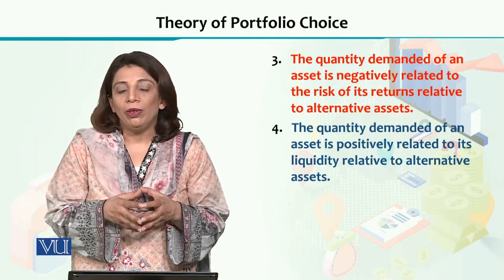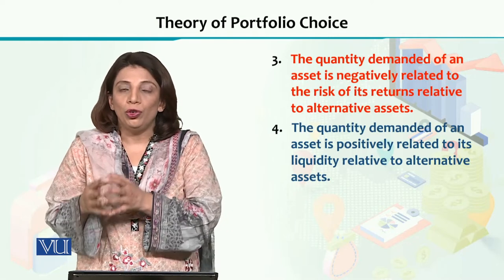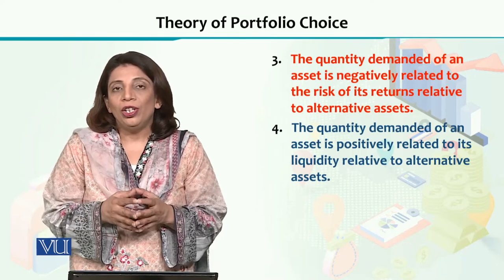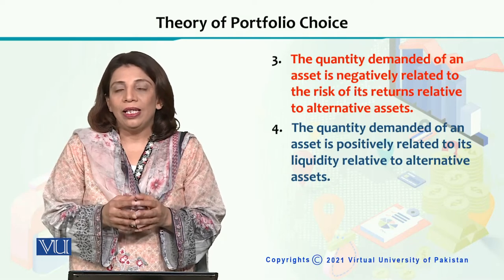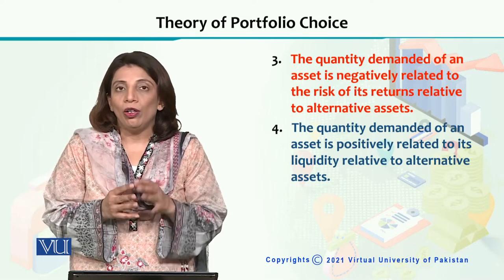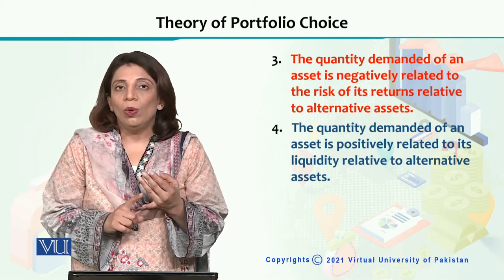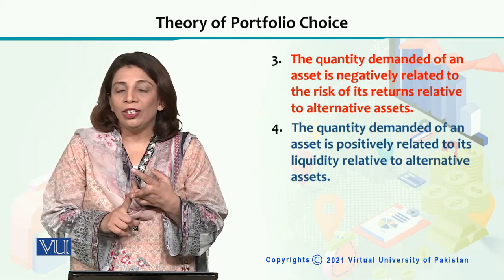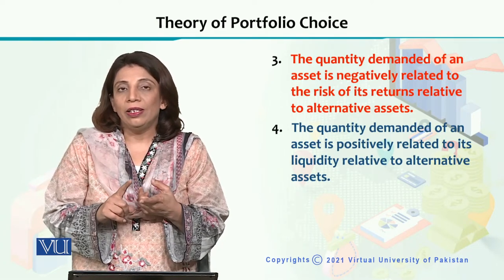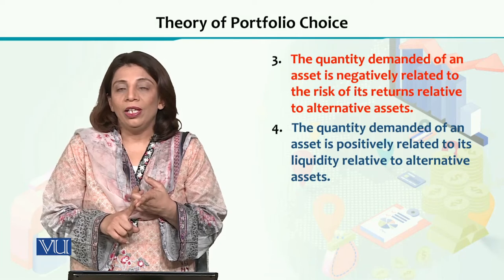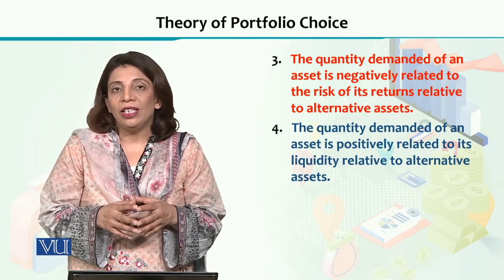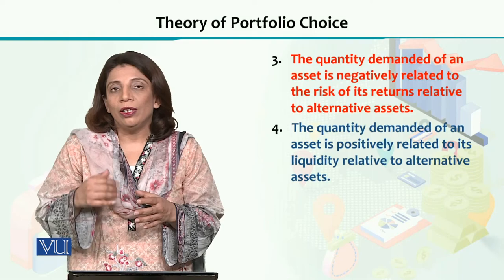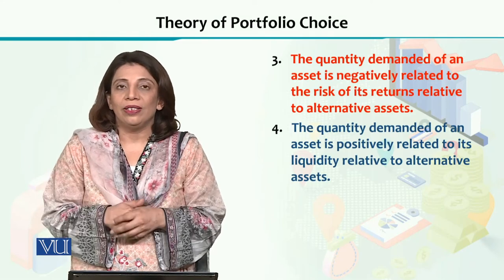So when we talk about the theory of portfolio choice, it tells us that the quantity demanded of a financial asset depends upon four factors: wealth, the expected return, the risk associated with it, and the liquidity of that particular financial asset relative to the liquidity of other alternative financial assets.